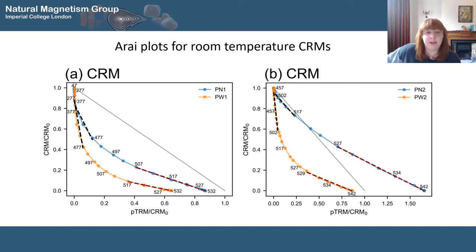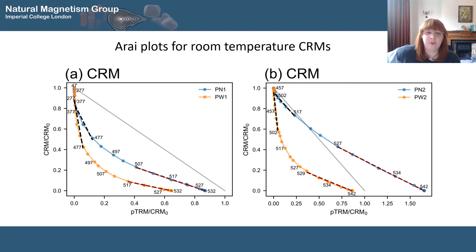Another important thing to look at is two regions of linearity at high and low temperature, with the potential for paleointensity estimations to be made. Particularly important is the region of low temperature, where there is the opportunity to make a paleointensity estimate without altering the sample, if this were a real sample.